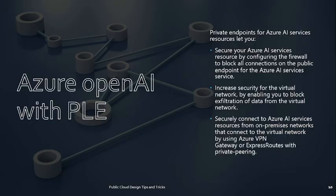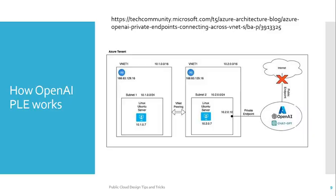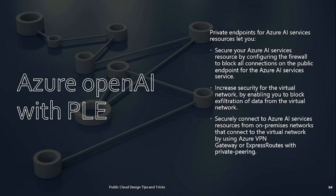This information has been gathered from a referenced link — please follow it for more details. Key points when using private link endpoints: private endpoints for Azure AI services let you secure your resources by configuring the firewall to block all connections on the public endpoint. It also increases security by blocking data exfiltration for virtual networks, and it securely connects to Azure AI services from on-premise networks. If you have a hybrid environment, you can connect to Azure OpenAI service from on-premise via the private link endpoint using Azure VPN Gateway or ExpressRoute with private peering.